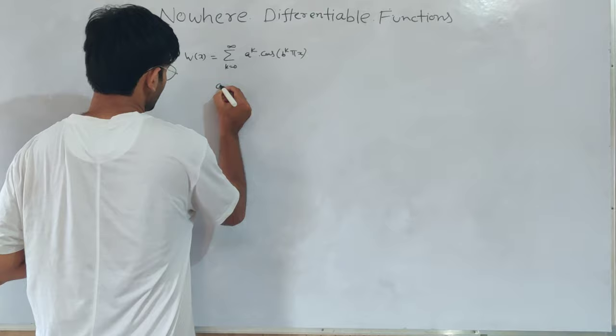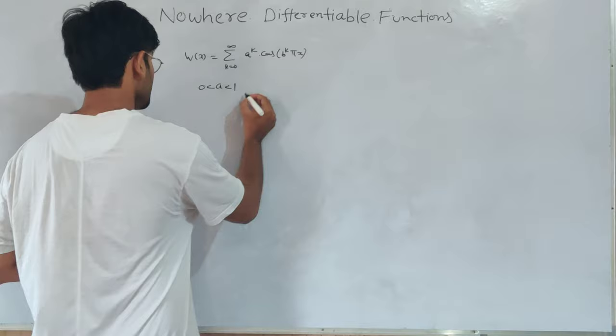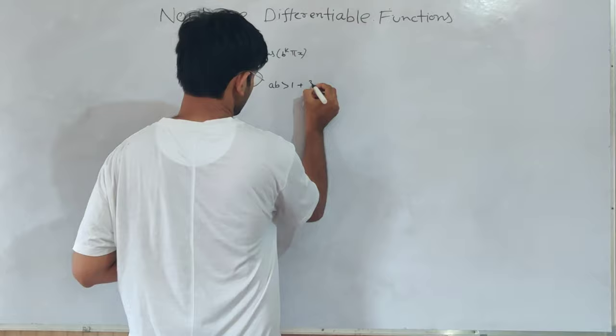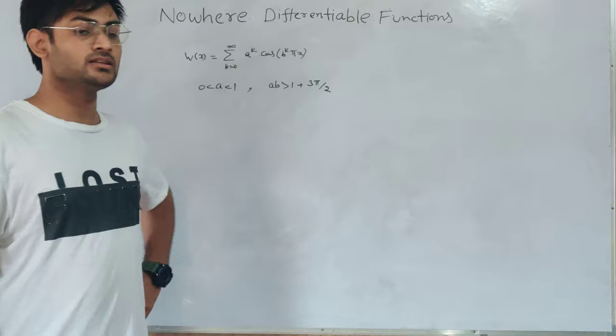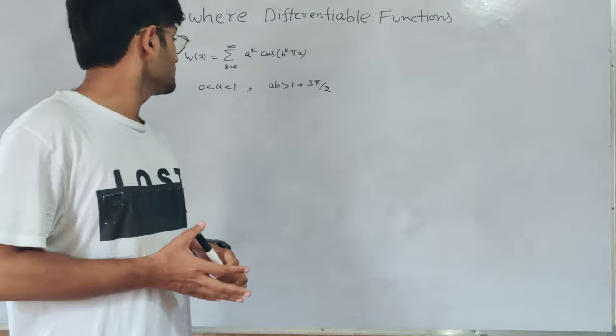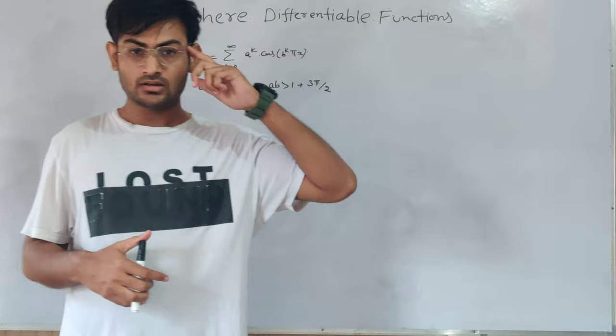So what were the conditions? One condition was that a is positive and less than 1. And the additional condition was ab to the power of k should be greater than 1 plus 3 by 2 pi. This is a special condition because it was required in proof, but after that, some mathematicians have proved that this condition is out and we can get a function which is nowhere differentiable without this condition.